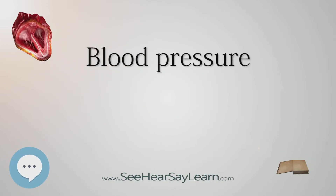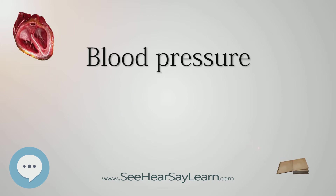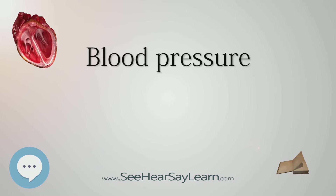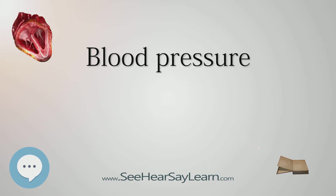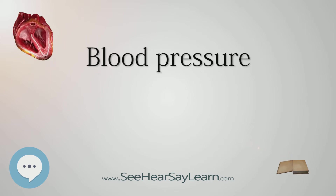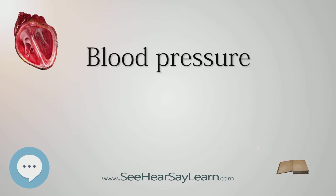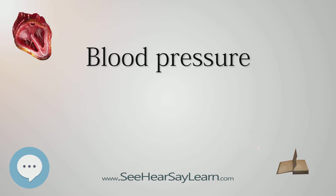Blood pressure (BP) is the pressure of circulating blood on the walls of blood vessels. Without further specification, blood pressure usually refers to the pressure in large arteries of the systemic circulation. It is usually expressed in terms of the systolic pressure — maximum during one heartbeat — over diastolic pressure — minimum in between two heartbeats — and is measured in millimeters of mercury (mmHg) above the surrounding atmospheric pressure, considered to be zero for convenience.